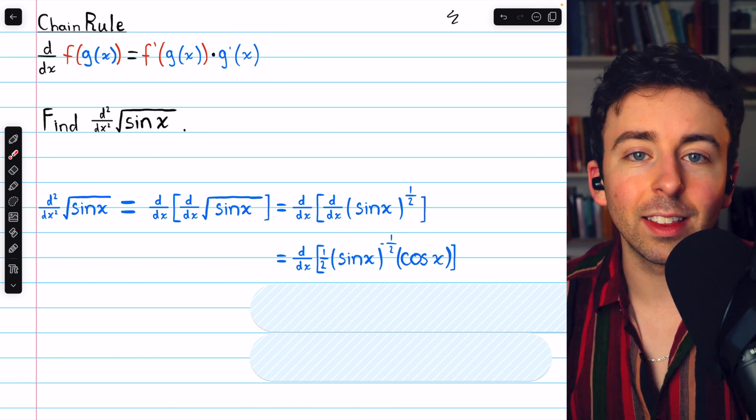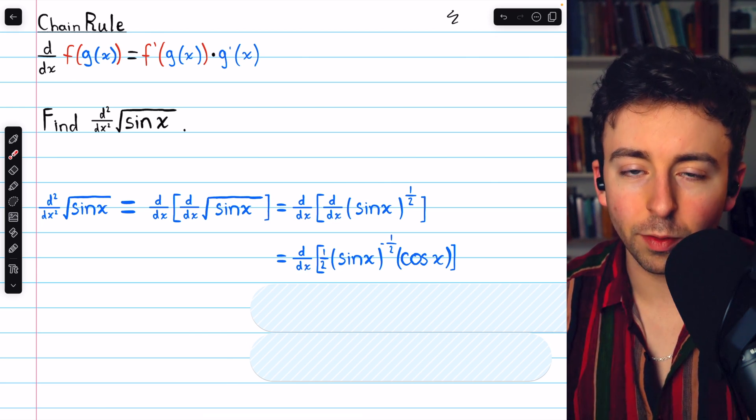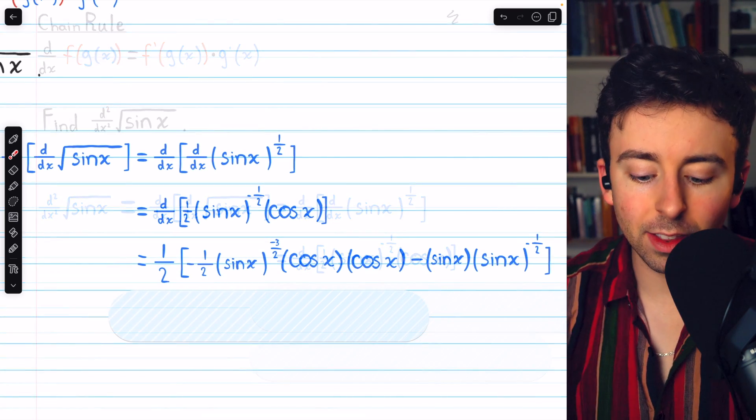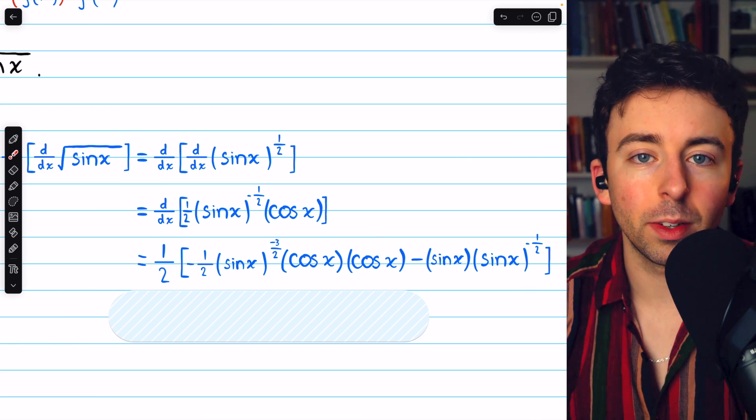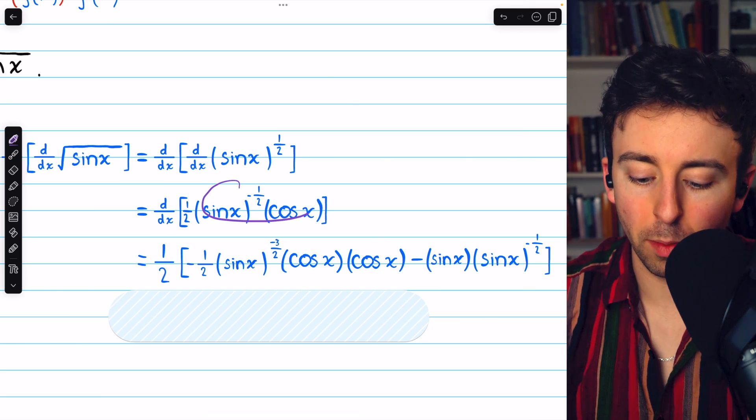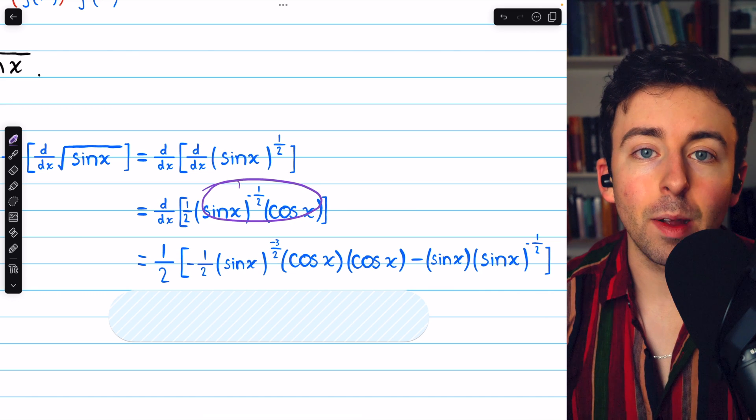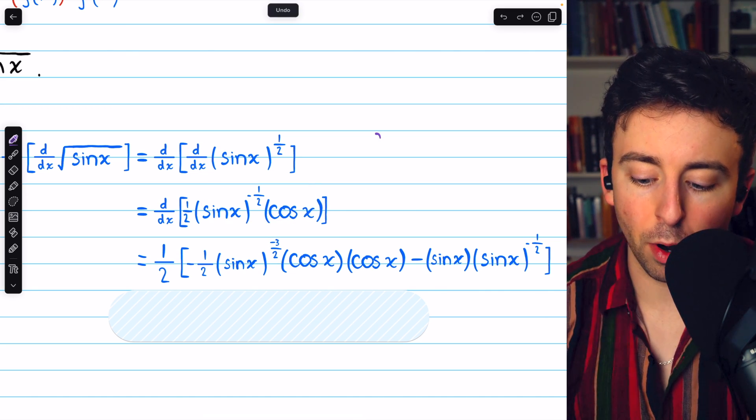So now we can take the derivative of this to find our second derivative. To take the derivative of this, let's first just bring the one-half out front and then take the derivative of what remains. What remains is a product, and so we'll have to use the product rule.